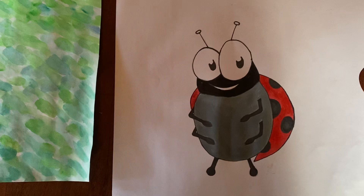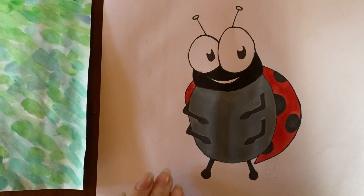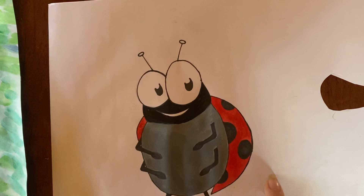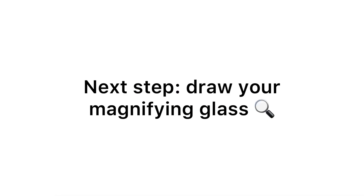The next thing we're going to do is draw our bug. You can choose whichever bug you want. I have done this cartoon ladybug, and there are some examples in the general folder for you to choose from. Now once I've done this, I need to draw my magnifying glass around the bug and color it in.